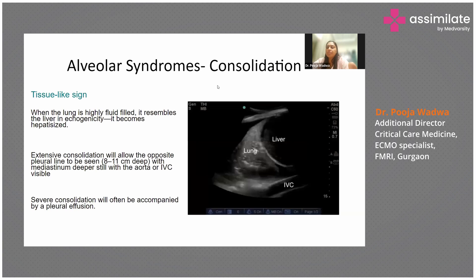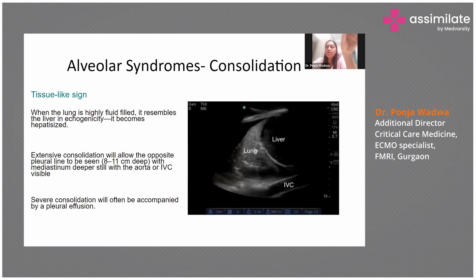This is alveolar syndrome consolidation. We know from pathology that consolidation looks like hepatization — there is a stage where the lung looks like liver. When the lung is highly fluid-filled, it resembles liver in echogenicity because it is becoming hepatized. Extensive consolidation can be seen, sometimes accompanied with pleural effusion — just above the IVC, between the IVC and lung, the black area is the pleural effusion.